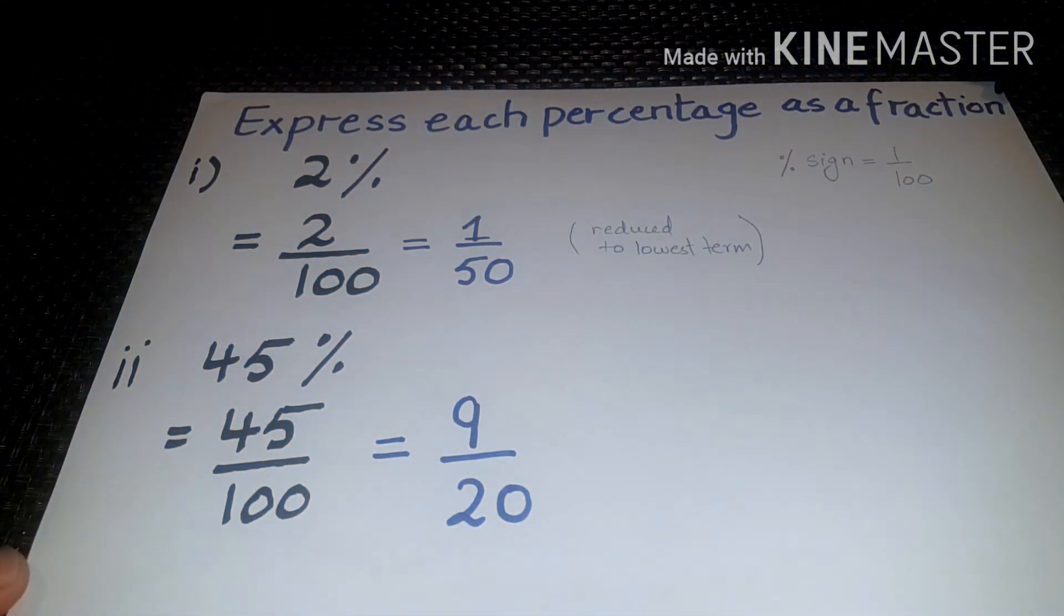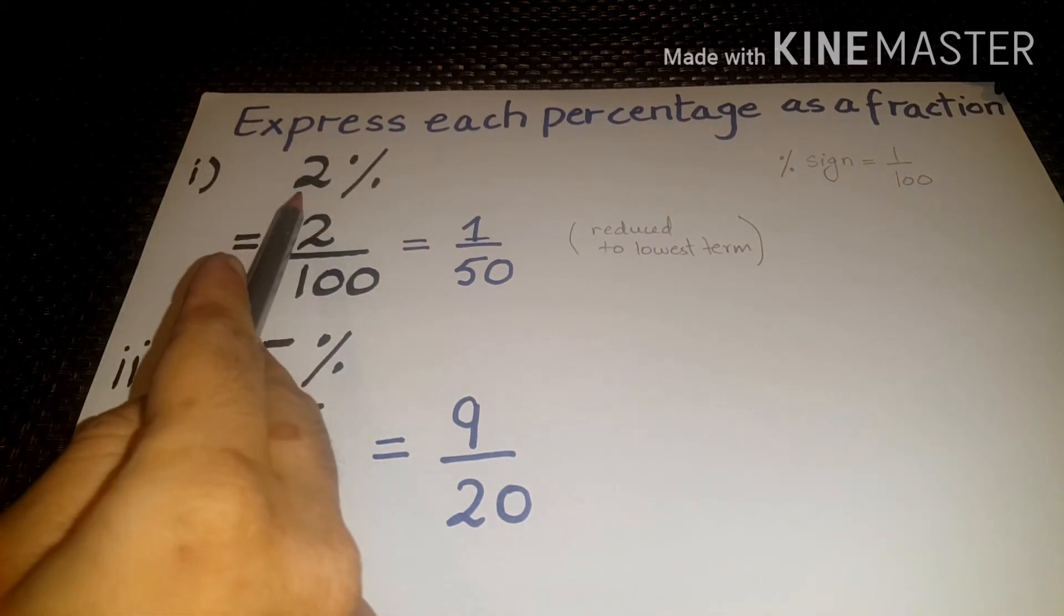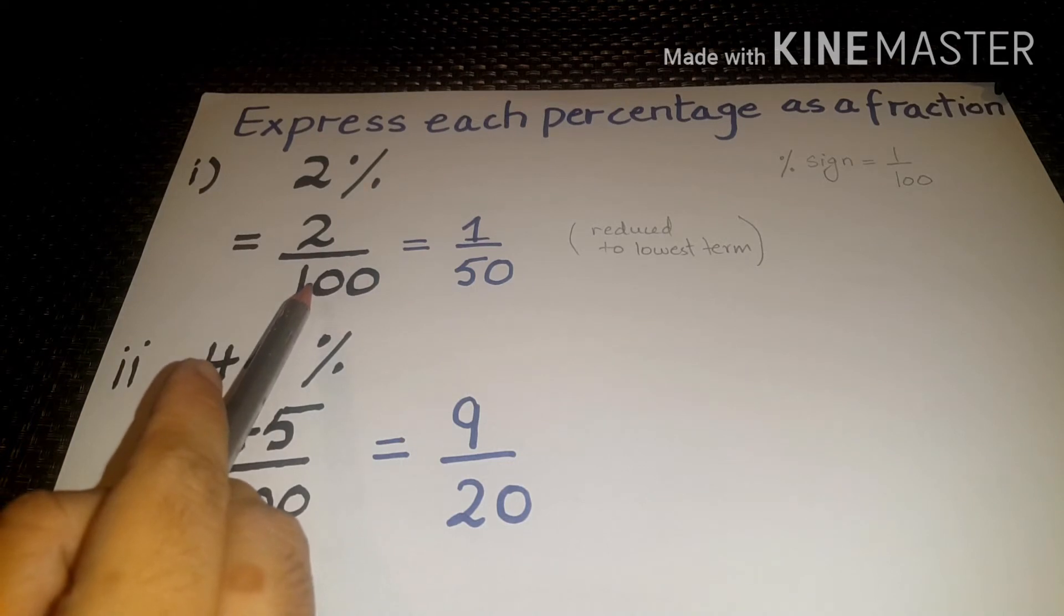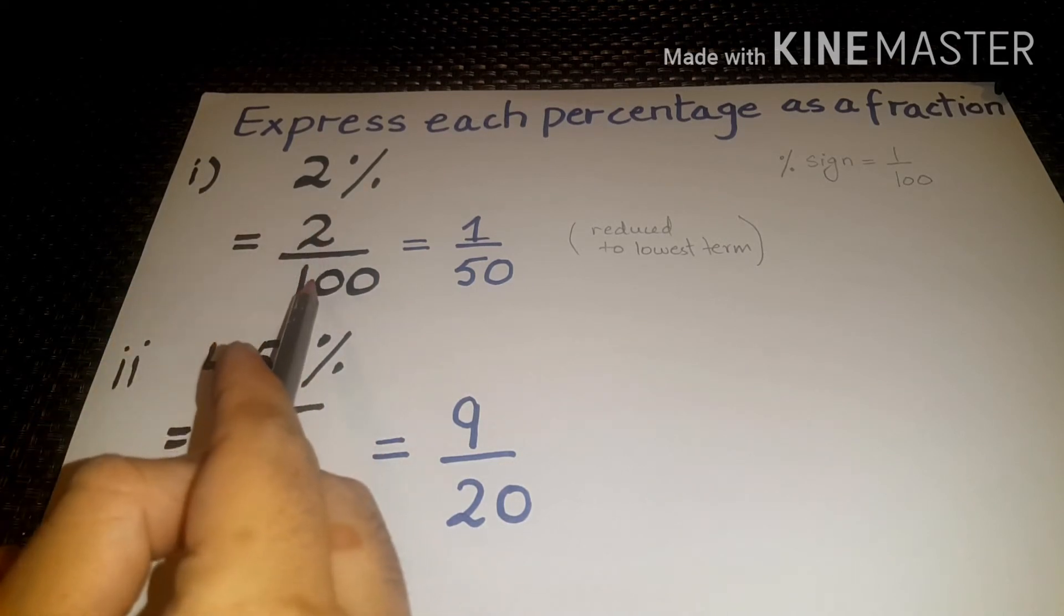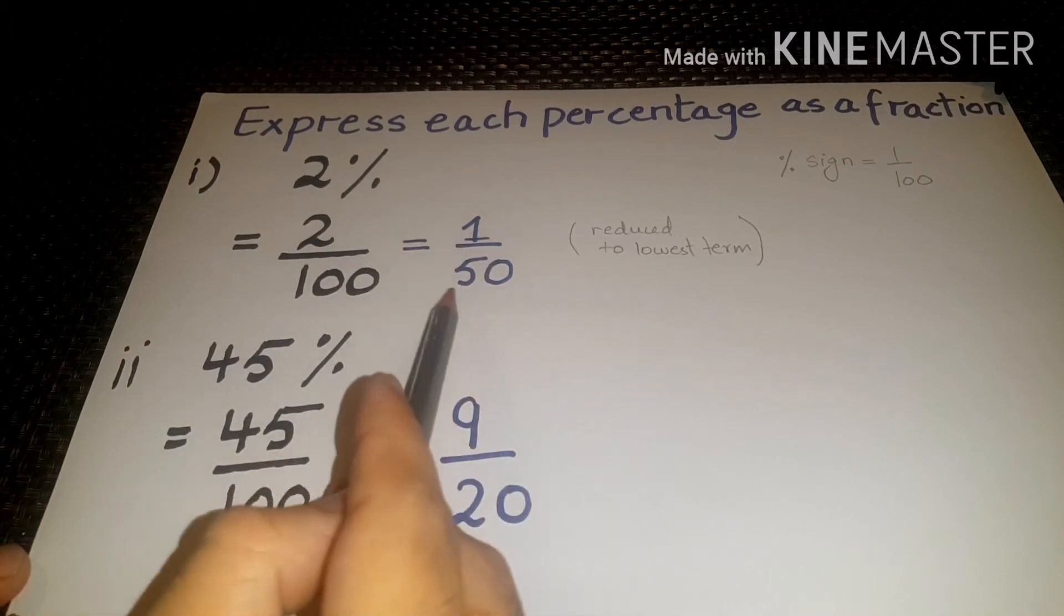Now let's do some questions. Express each percentage as a fraction. Question number one, two percentage. Two percentage means two divided by hundred. Now we will reduce this value to its lowest term. We get 1 by 50.